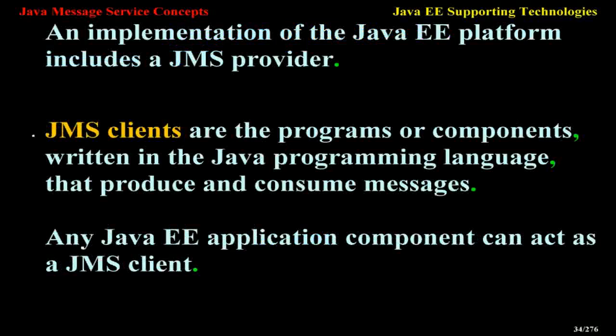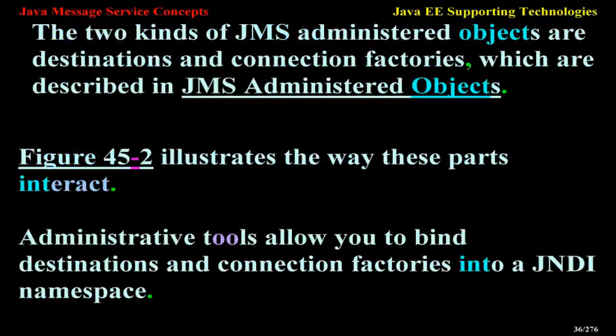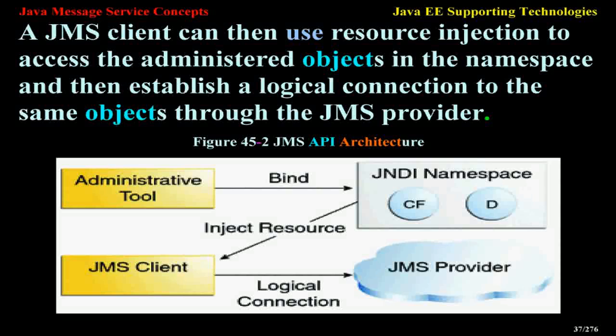JMS clients are the programs or components, written in the Java programming language, that produce and consume messages. Any Java EE application component can act as a JMS client. Messages are the objects that communicate information between JMS clients. Administered objects are pre-configured JMS objects created by an administrator for the use of clients. The two kinds of JMS administered objects are destinations and connection factories. Administrative tools allow you to bind destinations and connection factories into a JNDI namespace. A JMS client can then use resource injection to access the administered objects in the namespace and establish a logical connection through the JMS provider.